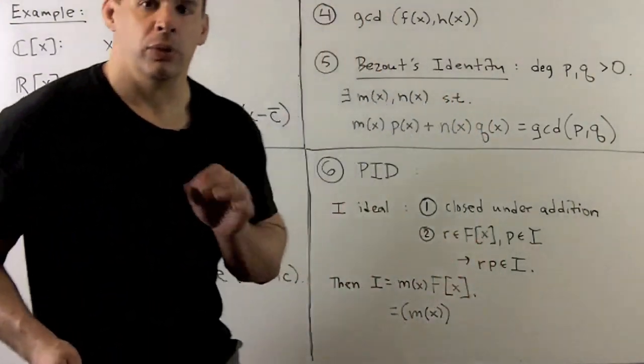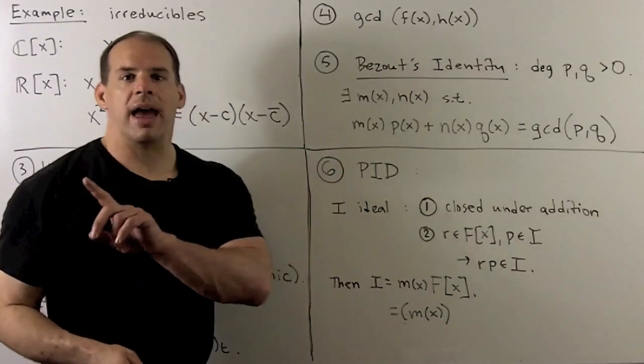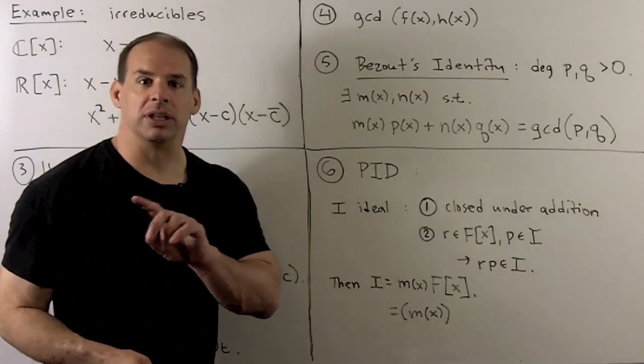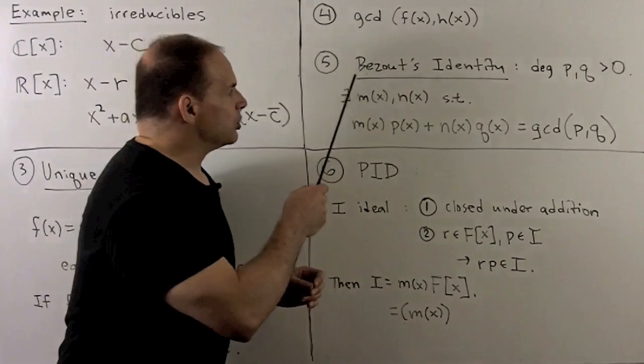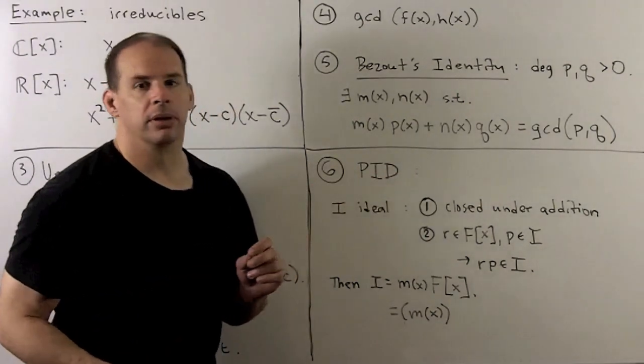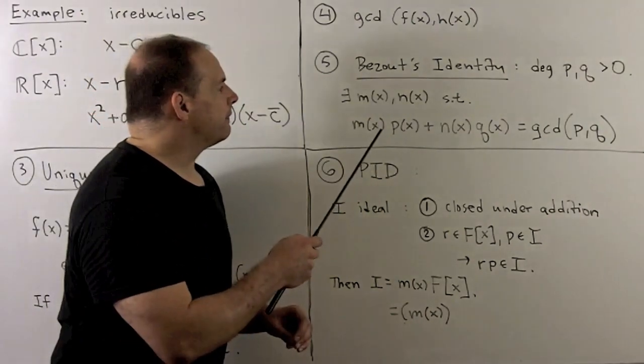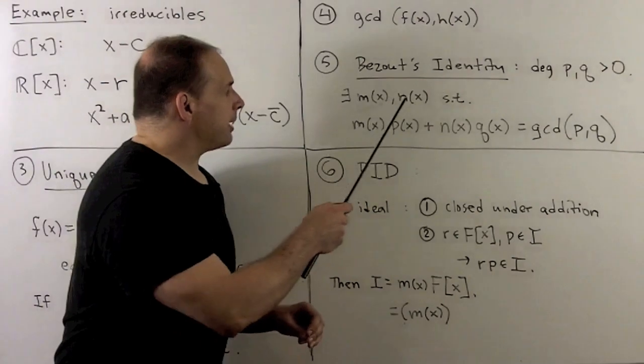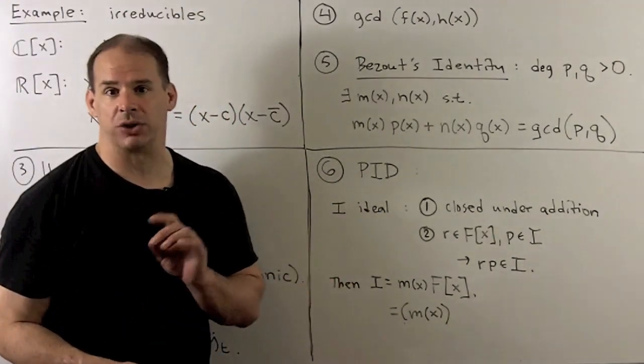Now, with the unique factorization, we'll talk about greatest common divisor. And then we'll have all the theory that comes in from the Euclidean algorithm. One useful fact, we have Bezout's identity for polynomials. So if the degree of P and Q are positive, then we'll be able to find polynomials M and N such that M*P plus N*Q is equal to the greatest common divisor of P and Q.